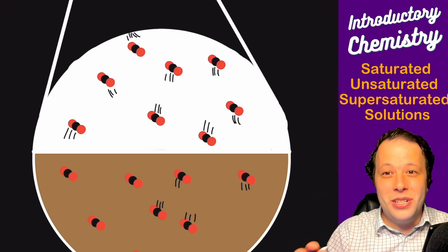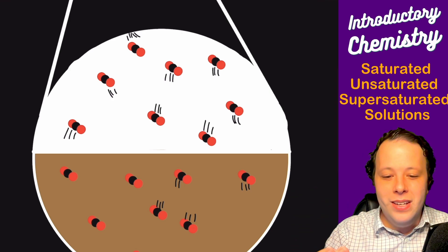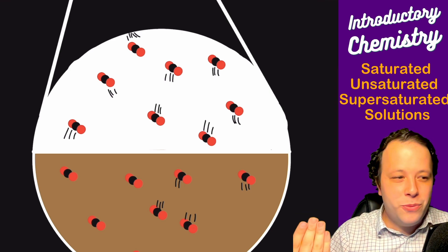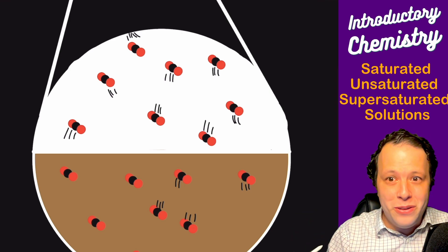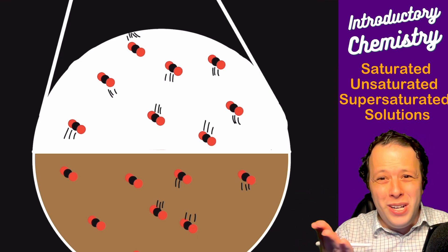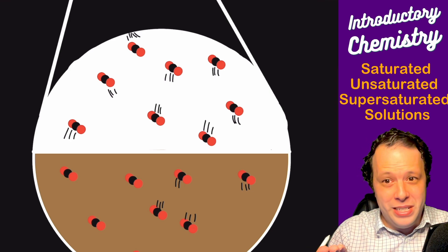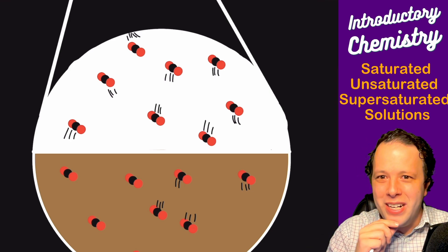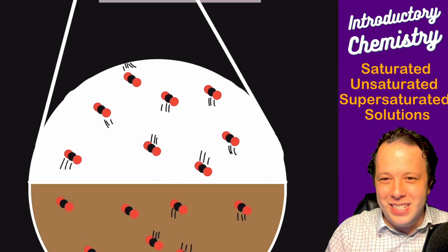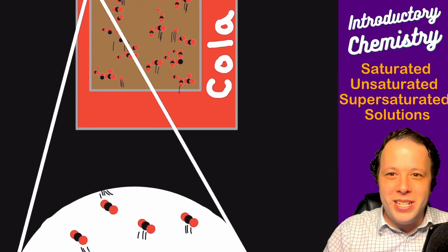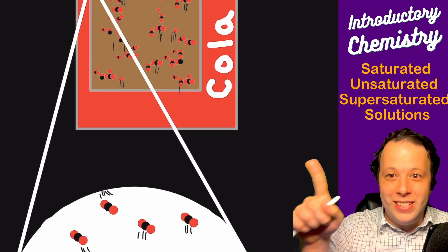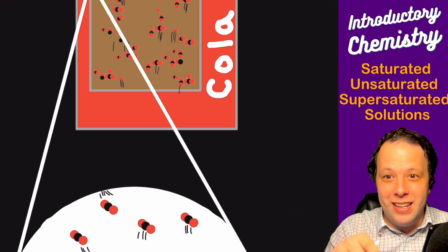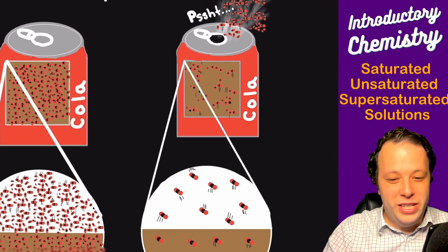Therefore your soda is going to go flat over time. How do you keep preserved soda for a really long time? One is don't open it as many times if it's a two liter bottle. If you're going to probably drink it, try to drink as much of it in one sitting as possible because the more times you open it, the more the gas is going to have to fill up the entire space again to equilibrate once more.